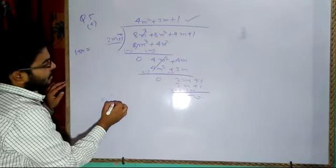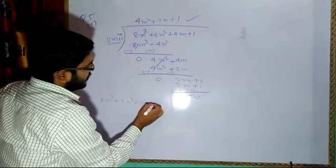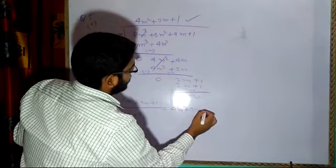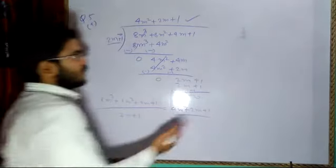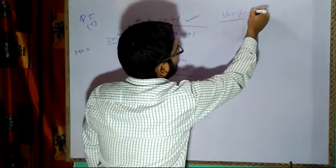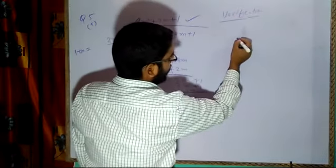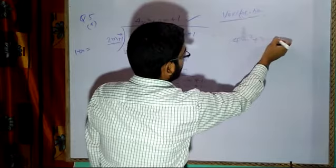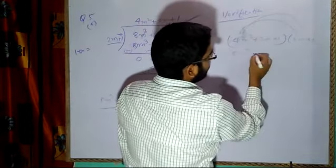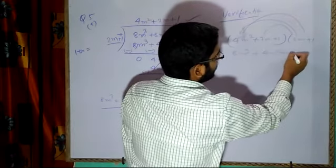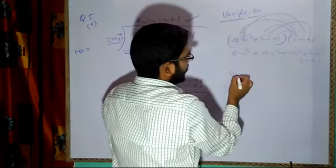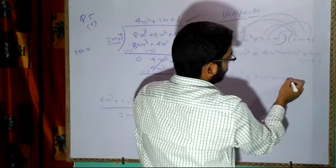So you can write: 8m³ plus 8m² plus 4m plus 1 divided by 2m plus 1 is equal to 4m² plus 2m plus 1. For verification, multiply the quotient 4m² plus 2m plus 1 with the divisor 2m plus 1: you get 8m³ plus 4m² plus 4m² plus 2m plus 2m plus 1, which simplifies to 8m³ plus 8m² plus 4m plus 1. This matches the original dividend.